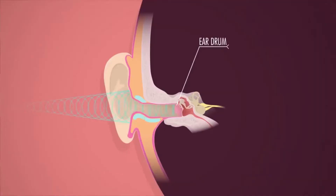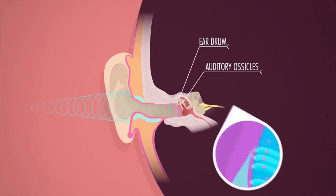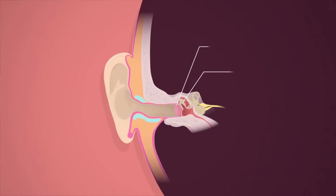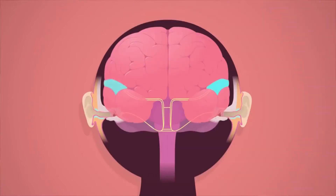These waves eventually reach the ear, where they set into vibration an organ called the eardrum. Consequently, nerves send impulses to the brain, which translates the phenomenon into the sensation of music.